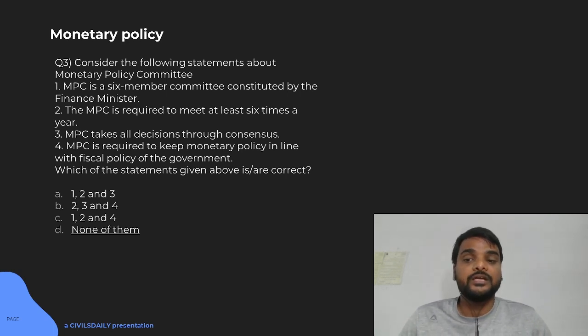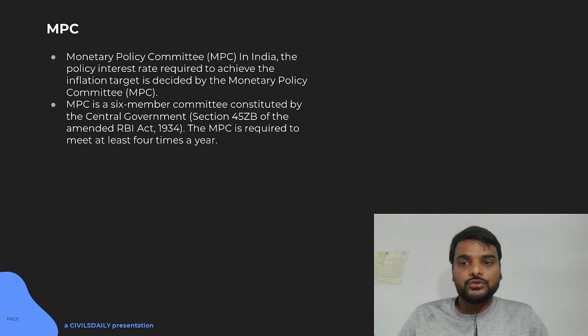All six members can take independent decisions and they can also issue a statement if they do not agree with the overall committee decisions. MPC is required to keep monetary policy in line with fiscal policy of the government. This is not mandatory. MPC can take its own decision independent of fiscal policy. There is no requirement to keep in line. The only objective of MPC is to keep its target of inflation around 4 plus or minus 2.